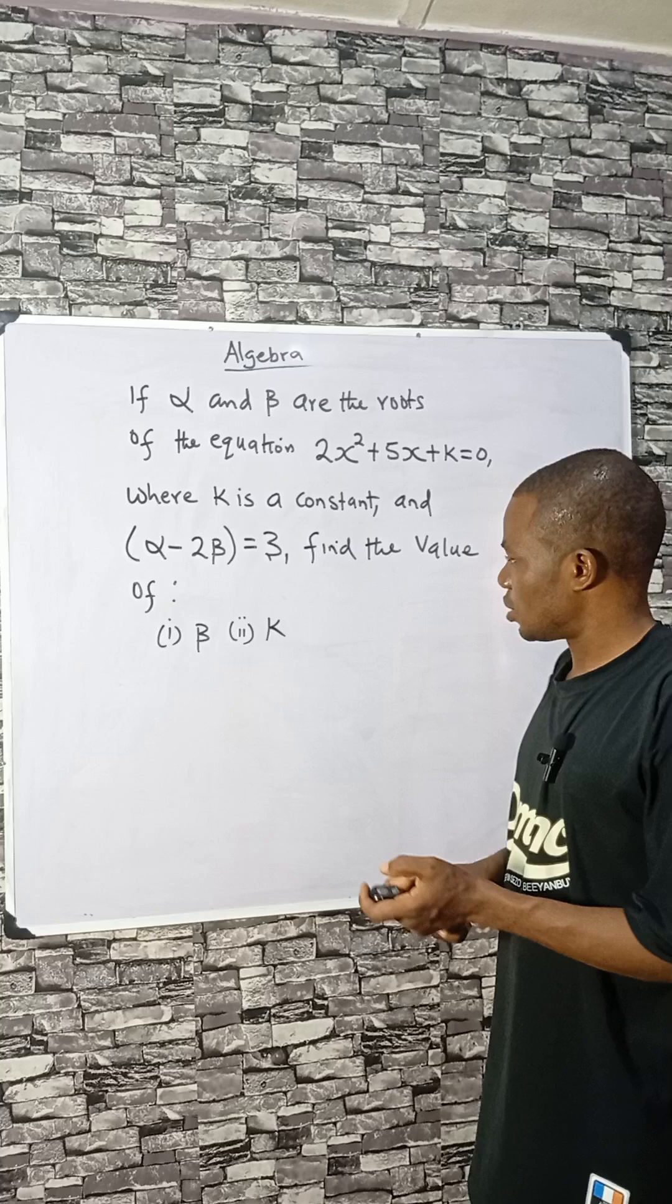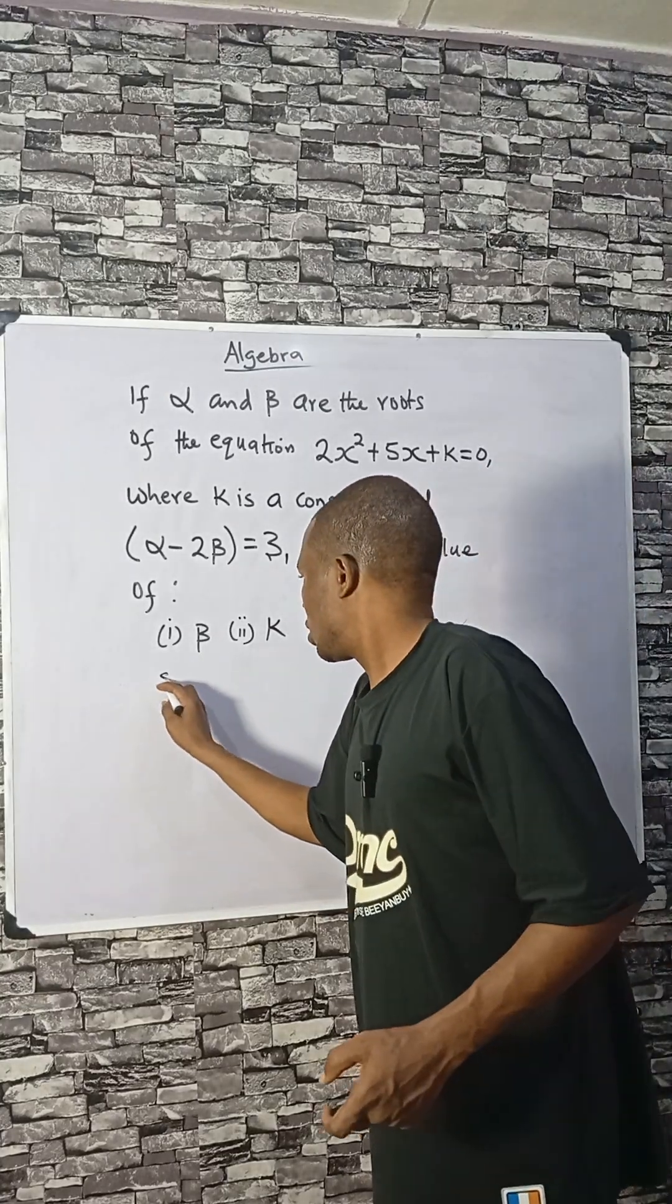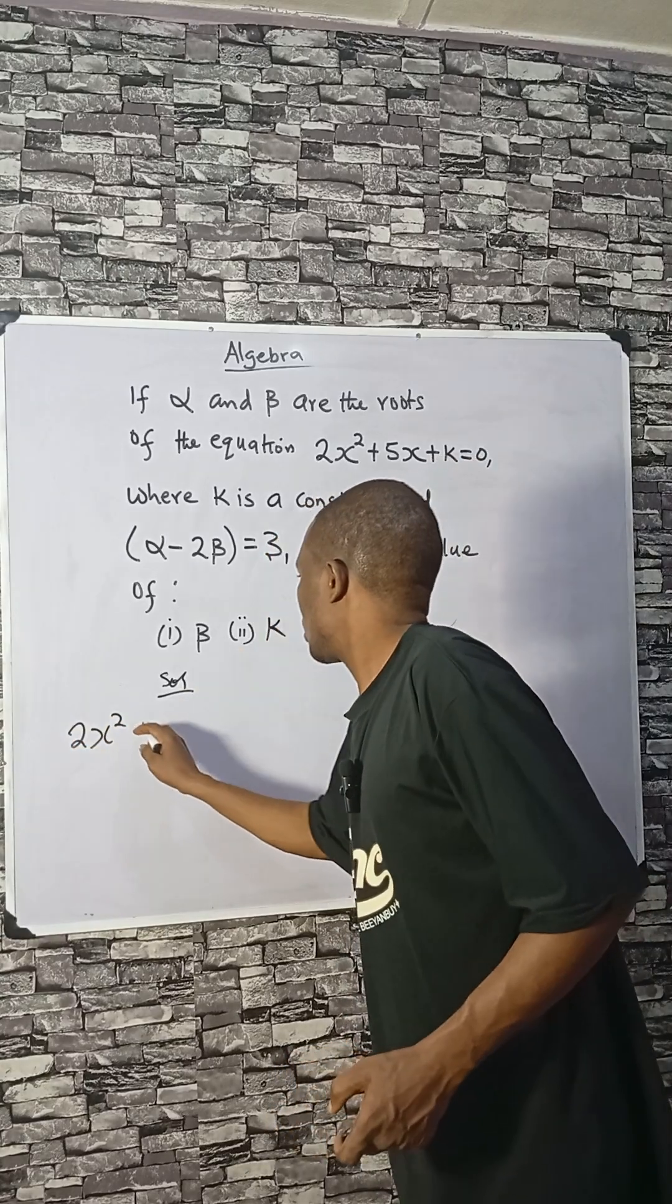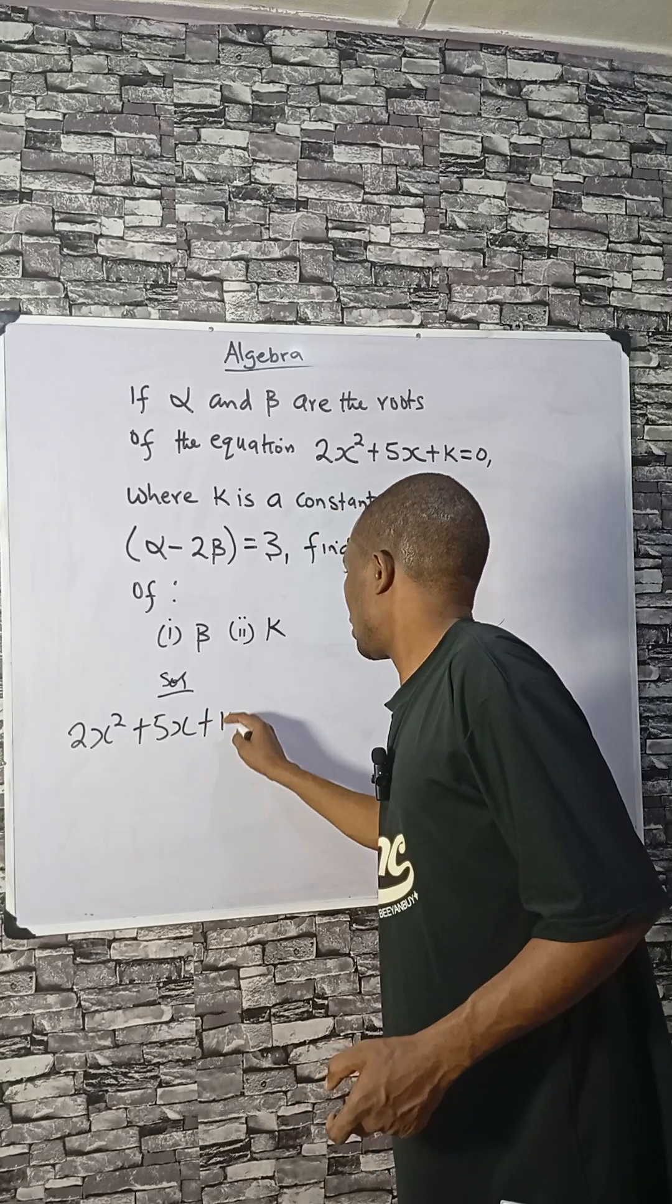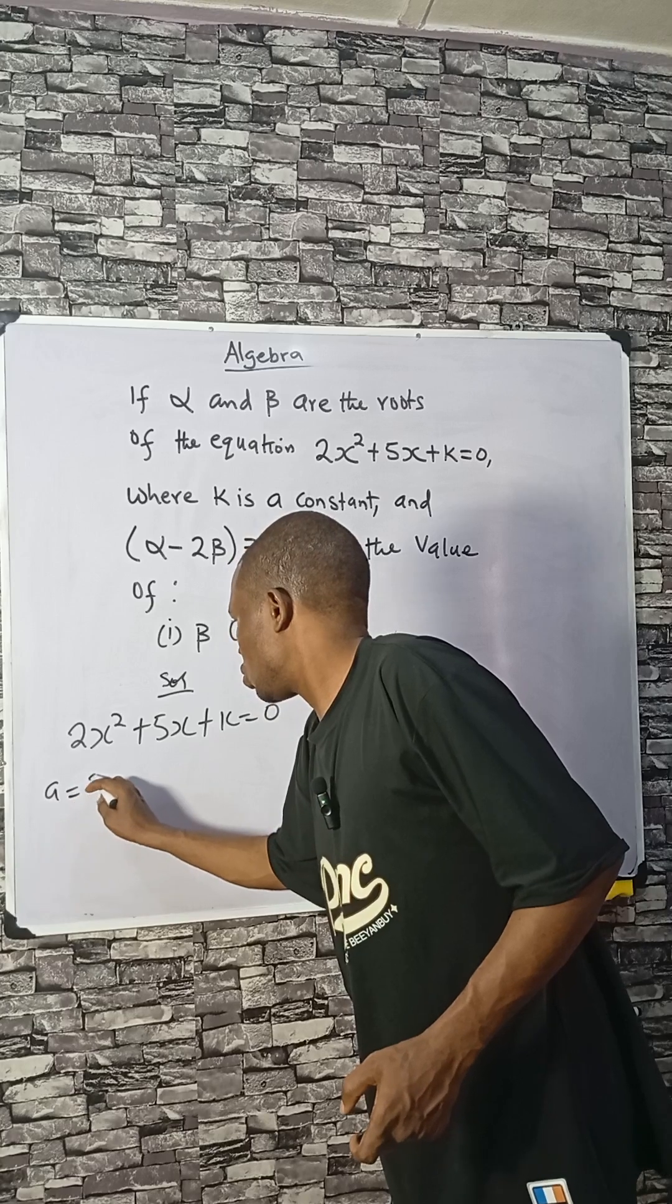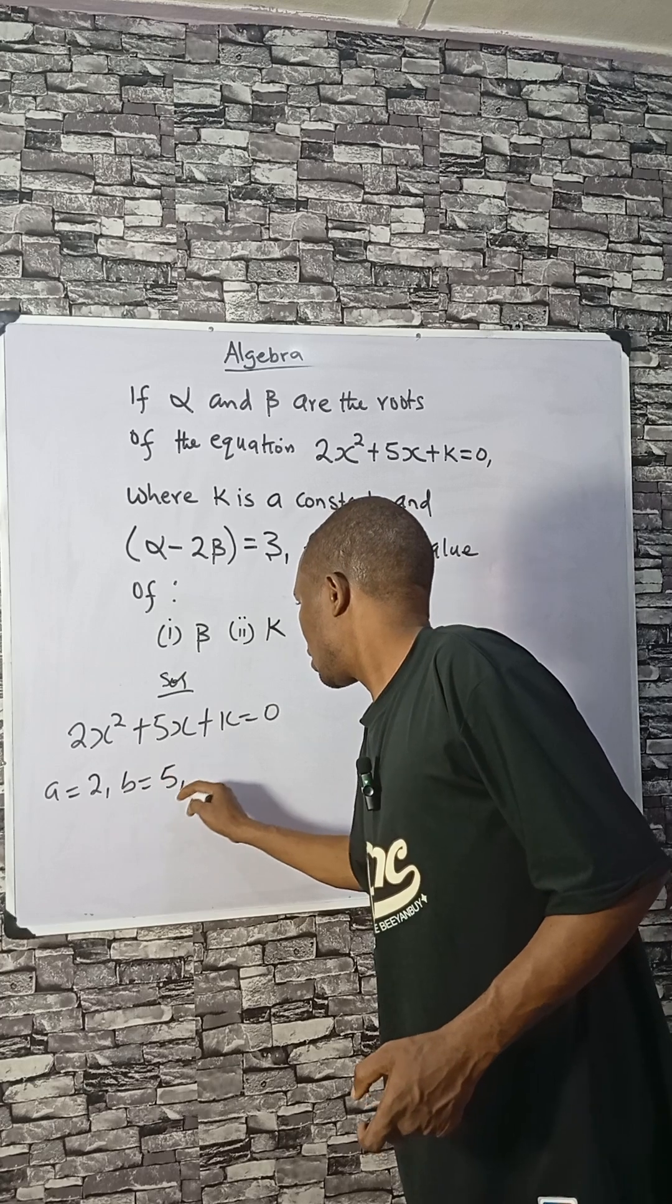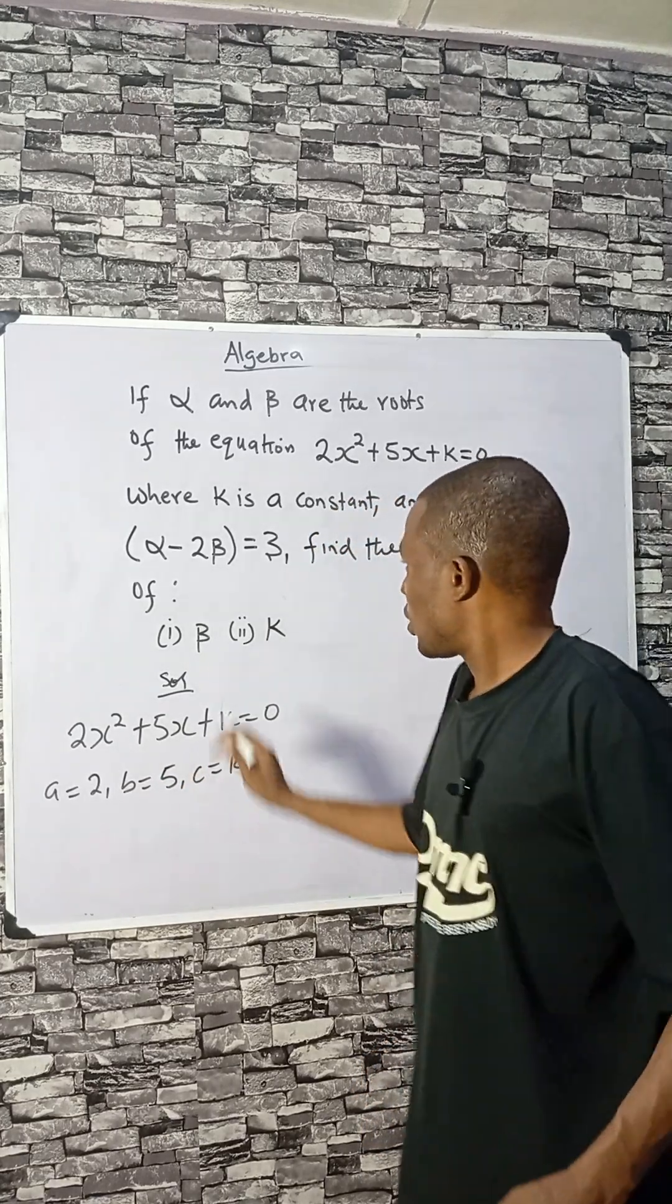The first thing you need to do is copy the equation. The equation is 2x squared plus 5x plus k equals 0. Now here in this equation, our a is 2, the coefficient of x squared. Our b is 5. Our c is k, which is the constant.